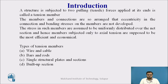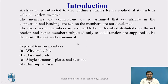Before going to tension member, we'll see the definition — the basic meaning of a tension member. A structure or a member which is subjected to two pulling forces applied at the ends is called a tension member. The members and connections are arranged so that eccentricity in connection and bending stresses are not developed, ensuring uniform distribution of force. The stress in such members is assumed to be uniformly distributed over the net section, and hence members subjected only to axial tension are the most efficient and economical.